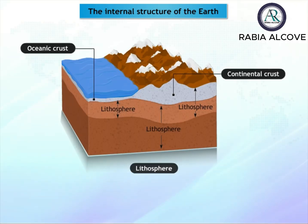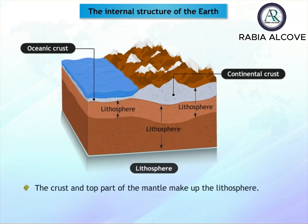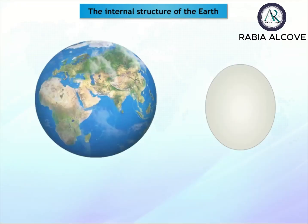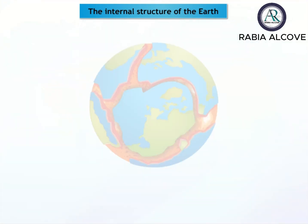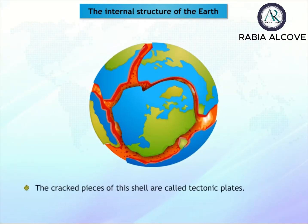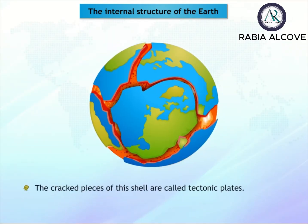The crust and the top part of the mantle make up the lithosphere. It is about 60 kilometers in thickness. The lithosphere is like a cracked eggshell, and the cracked pieces of this shell are called tectonic plates.